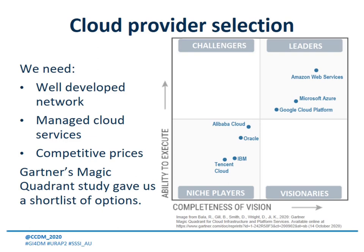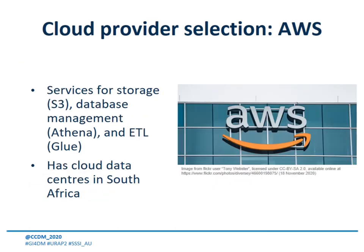These three distinguish themselves for good service level agreements available in the countries they have data centers in, and all have their own advantages and disadvantages. AWS has a wide array of services, including AWS S3 for file storage, AWS Athena for serverless databasing, and AWS Glue for ETL processes. AWS has data centers in Africa — in Cape Town — and I believe they have the greatest presence in the country, with three data centers in Cape Town.